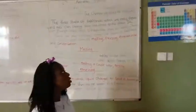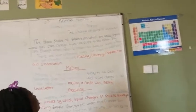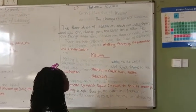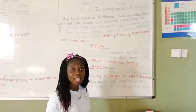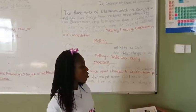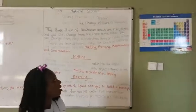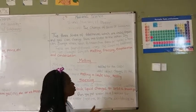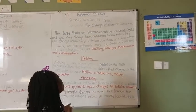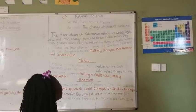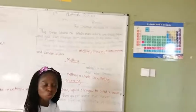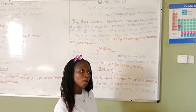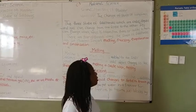The three states of substances — solid, liquid, and gas — can change from one state to another. They can change from solid to liquid and liquid to solid when heat is taken from them or added to them.